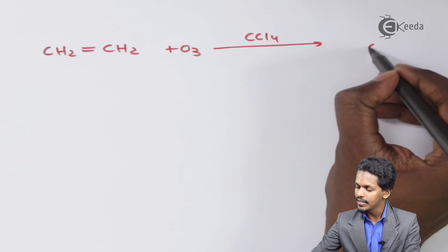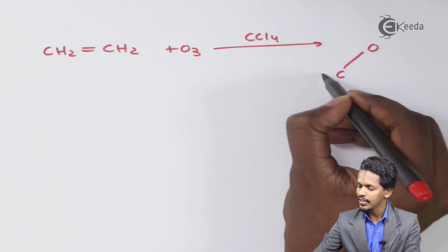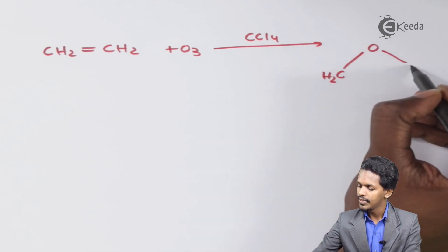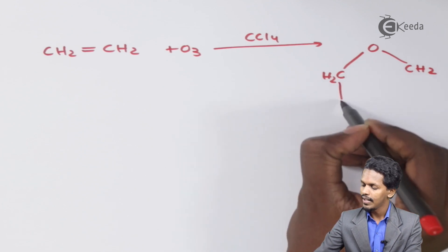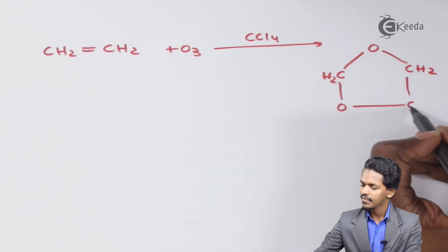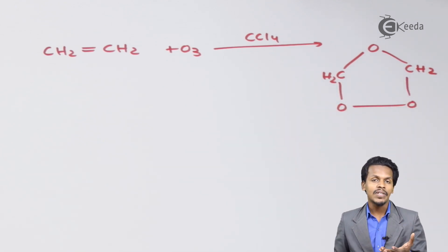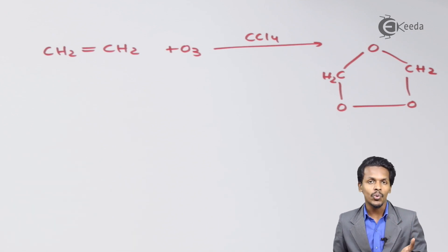The ozonide can be written as CH2-O-O-CH2 with oxygen, which on further hydrolysis with zinc and H2O, we can get a particular aldehyde. Therefore, this is the ozonide that has been produced, and this is the property of ozone as an oxidizing agent.